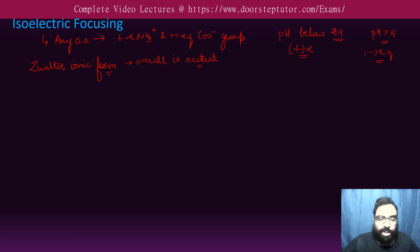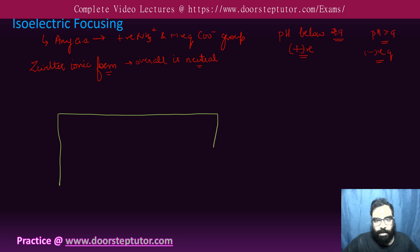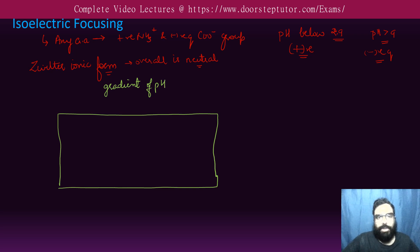So what we do, we make a gel, we construct a gel such that this gel has a gradient of pH, a gradient of pH. So it will start from around pH 3, pH 2 to 3.